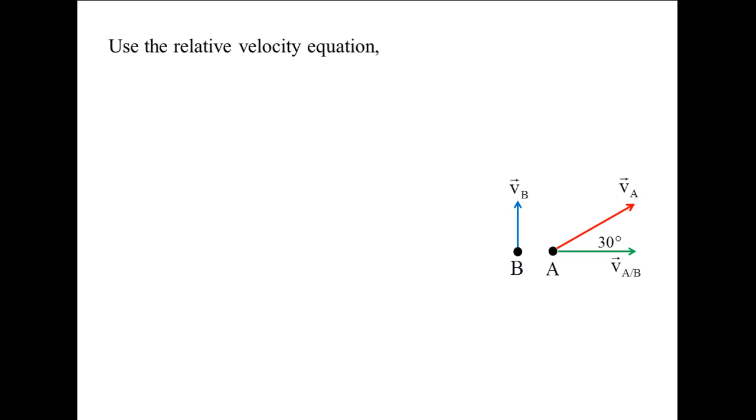We start with the relative velocity equation. The velocity of Jet A is equal to the velocity of Jet B plus the velocity of Jet A relative to Jet B.